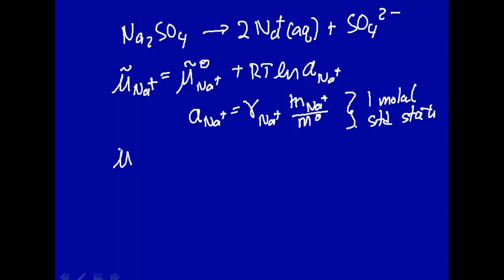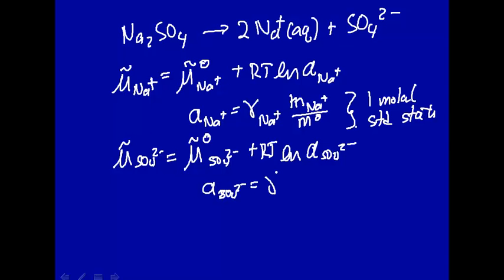If we look at the electrochemical potential of the sulfate, that's the same kind of expression: electrochemical potential of sulfate in the standard state, which is one molal, plus RT times the natural log of the activity of sulfate, where the activity of sulfate is the activity coefficient of sulfate times the molal concentration of sulfate divided by the standard state, which is one molal concentration.